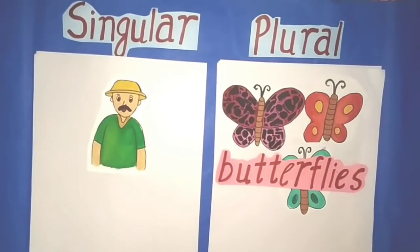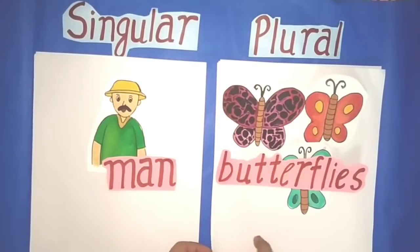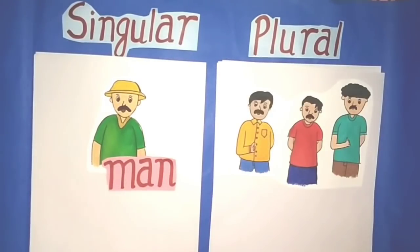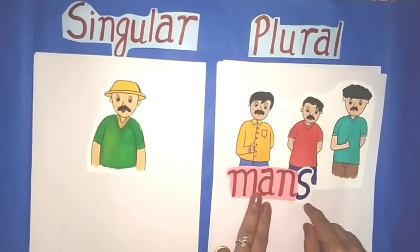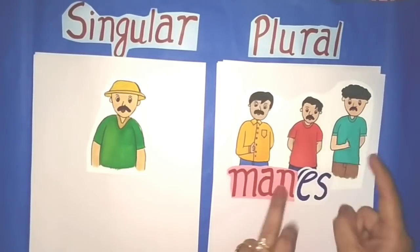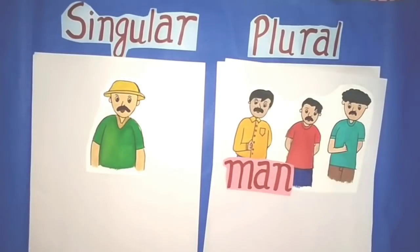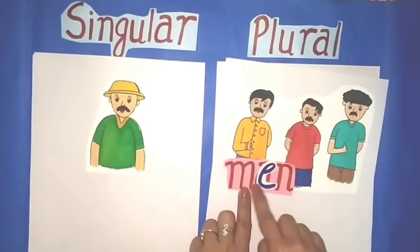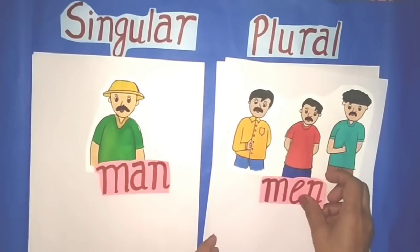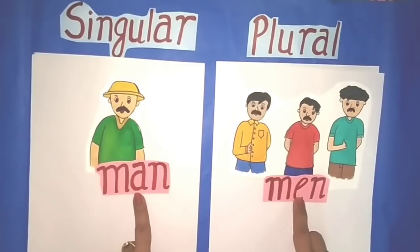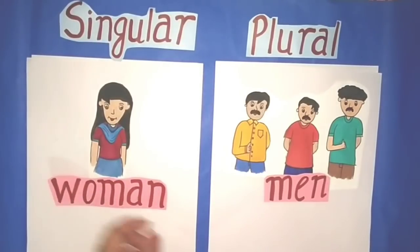Next, you can see: man — one man. Can we write it like this — mans? No, this is wrong, students. We have to write E in place of A: man, men.